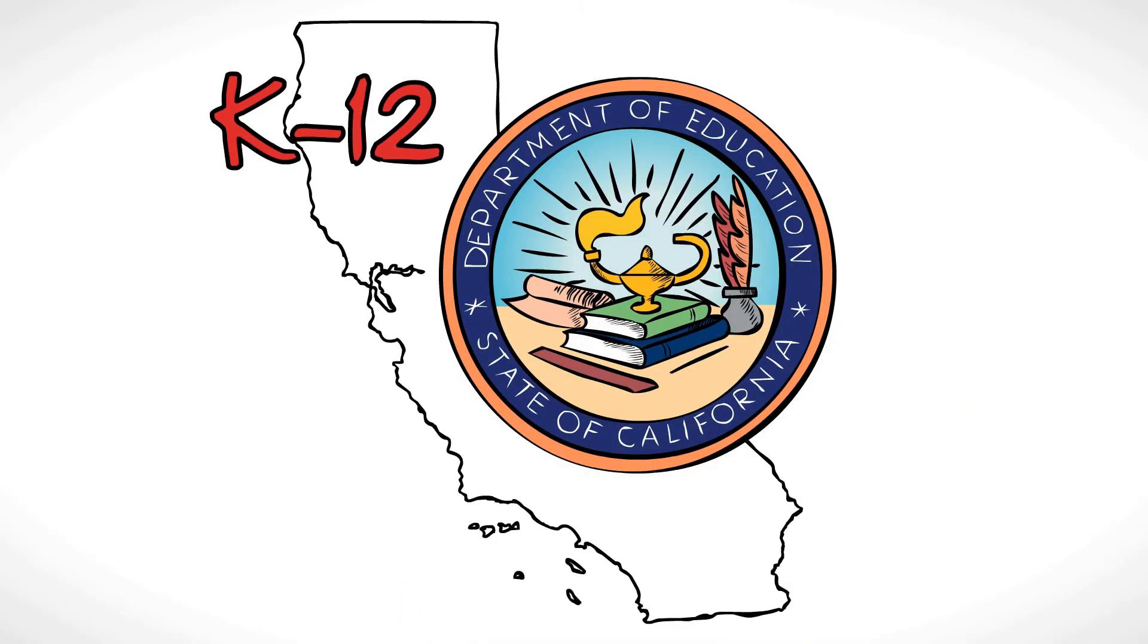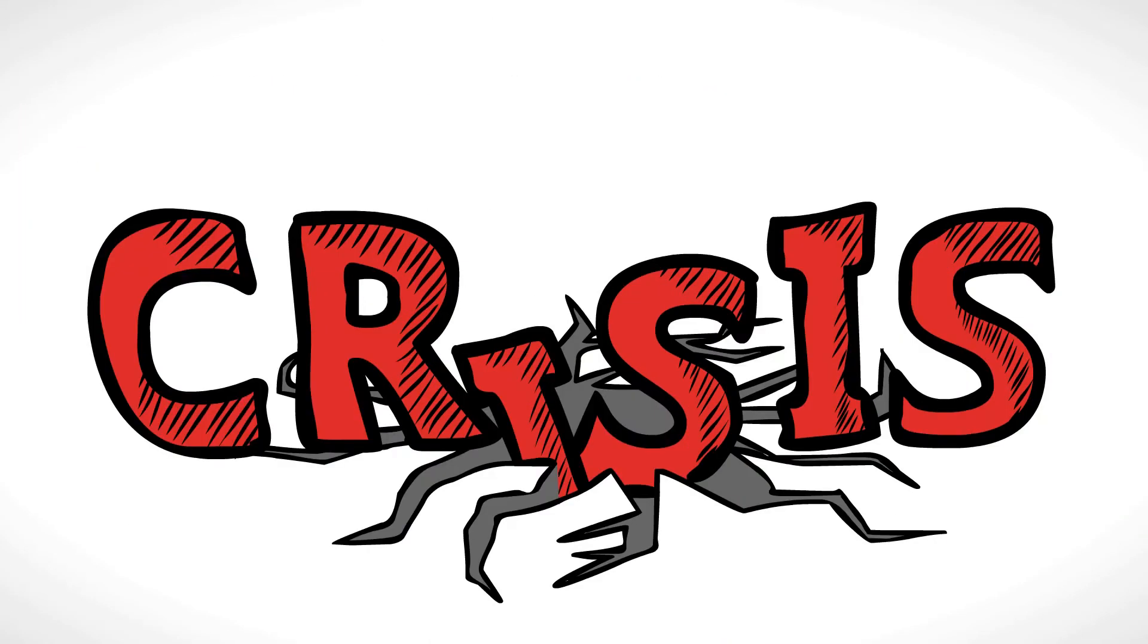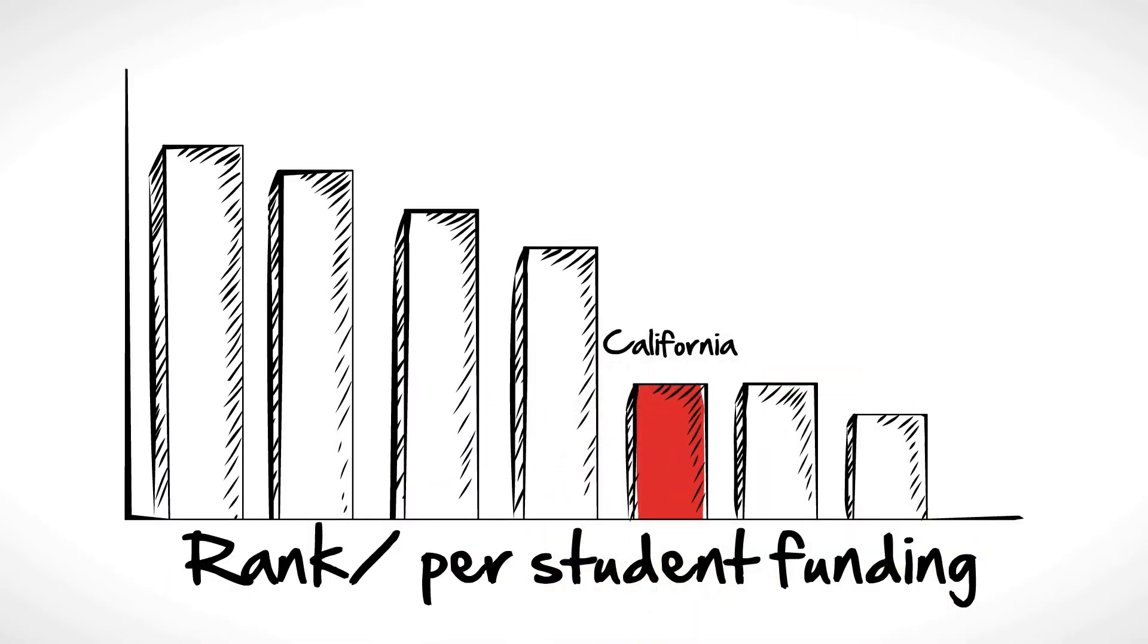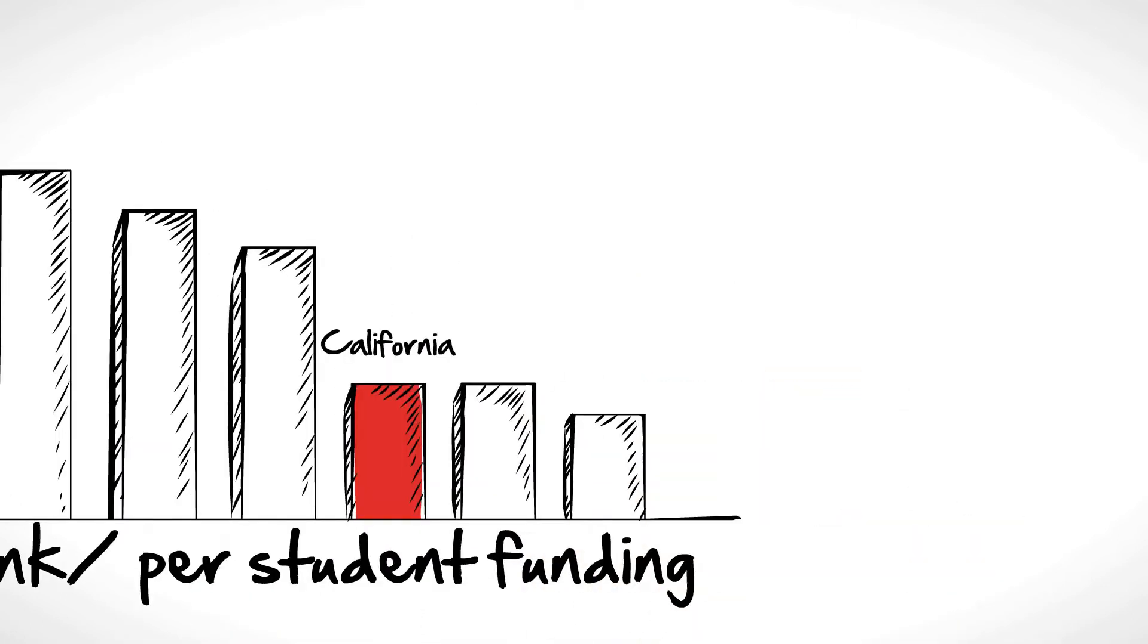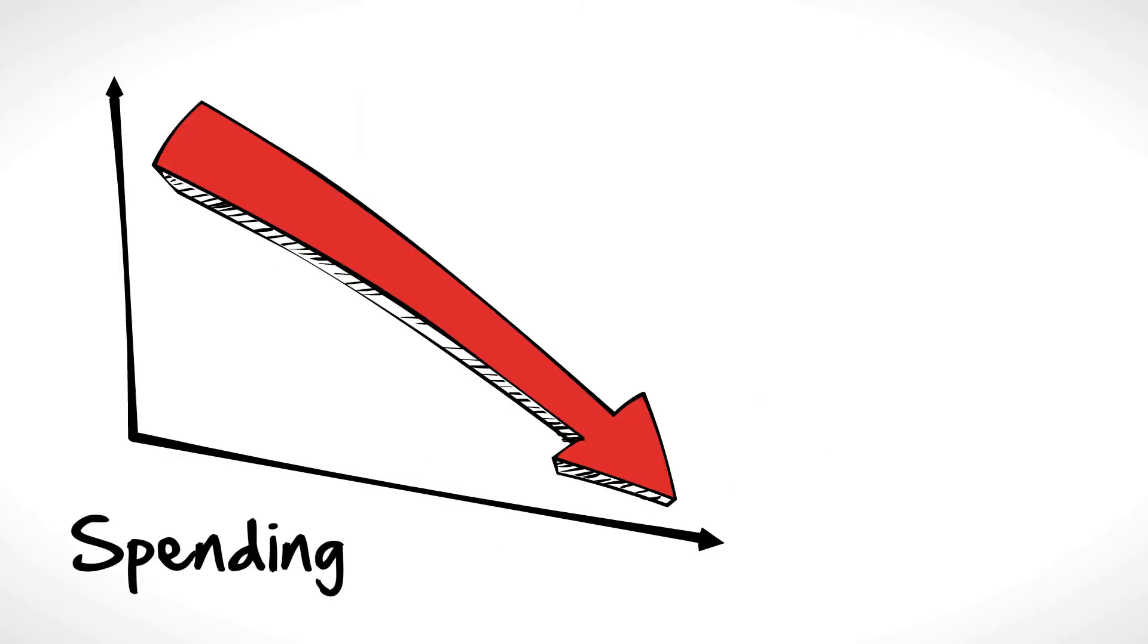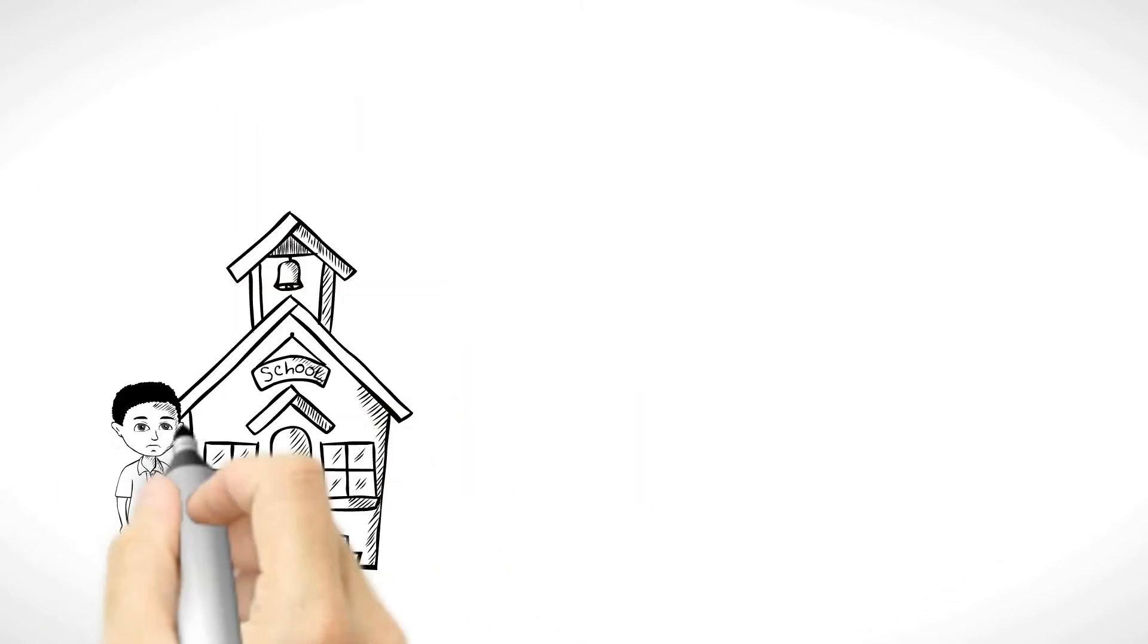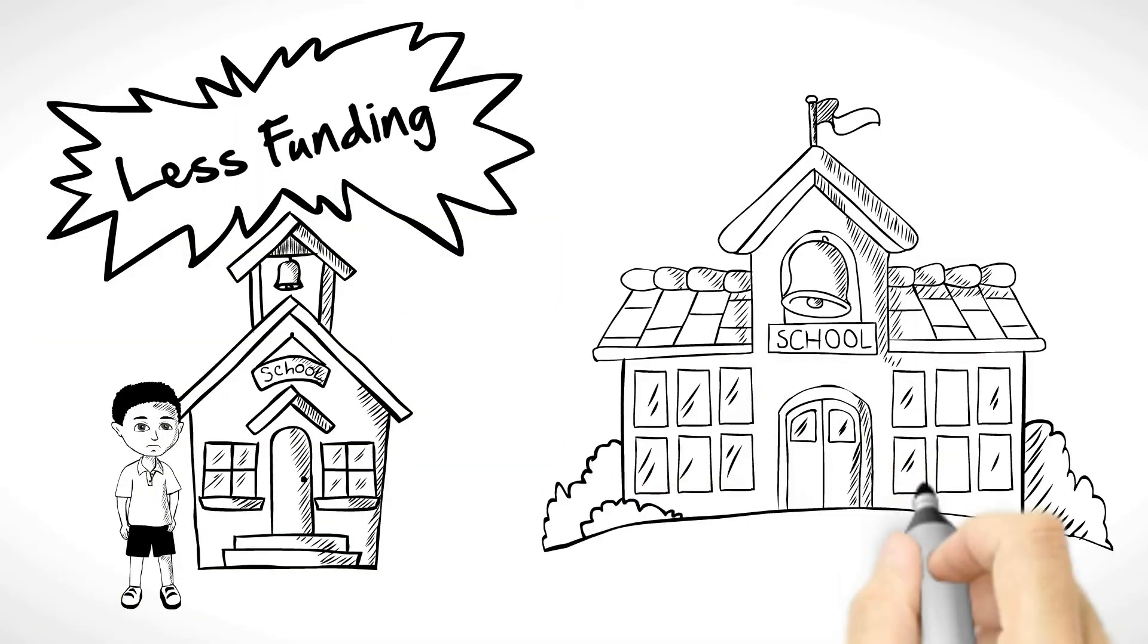K-12 education in California is in crisis. Not only does California rank near the bottom in per-student funding, and spending has been drastically cut, but students in low-income schools receive less funding than kids in well-to-do neighborhoods.